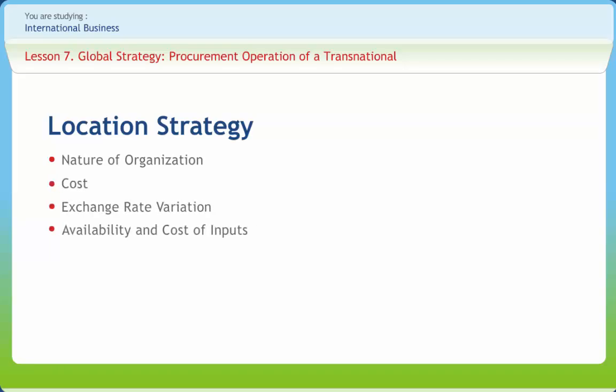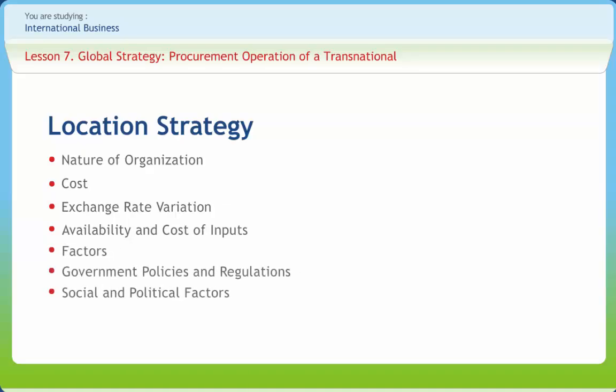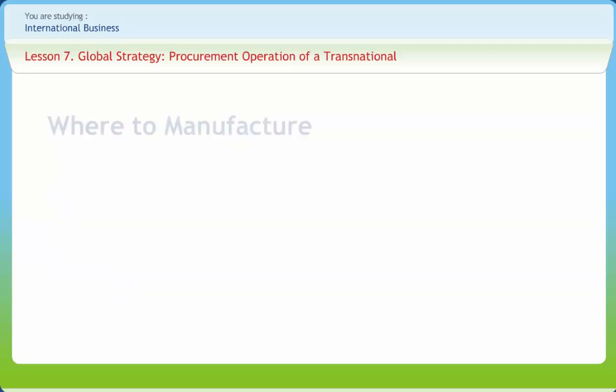The location of production facilities of a global corporation may be influenced by a number of factors like nature of organization, cost of operation, exchange rate variation, availability and cost of input factors, government policies and regulations, and social and political factors.